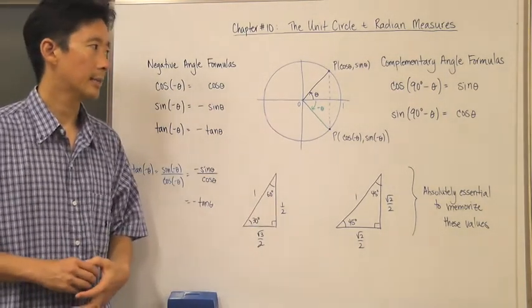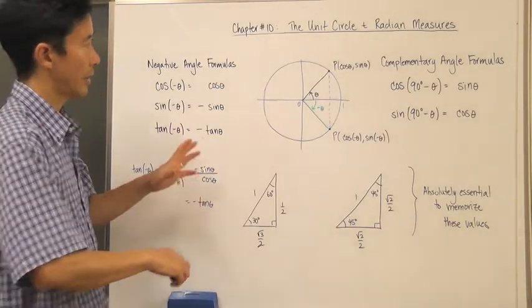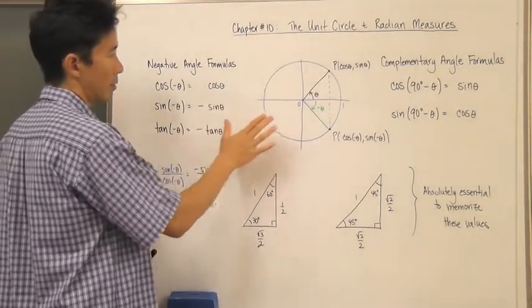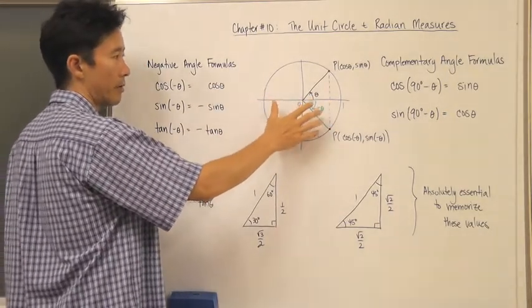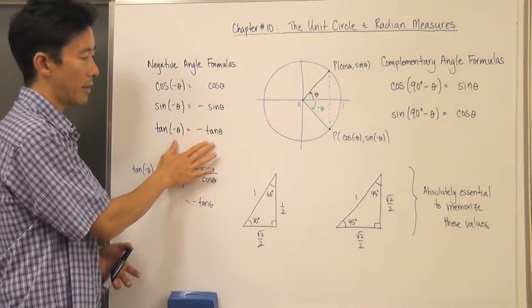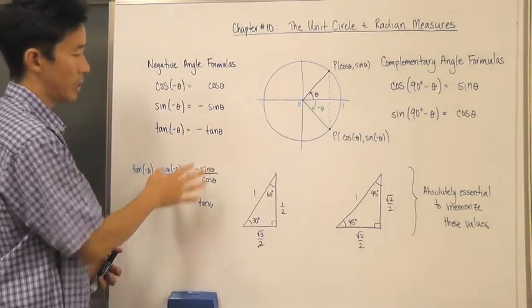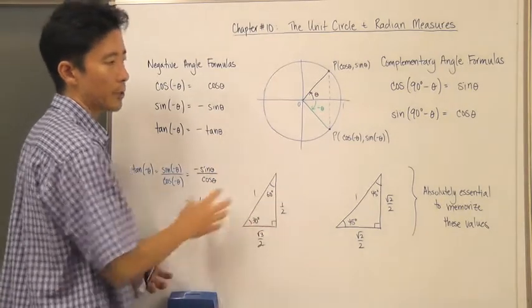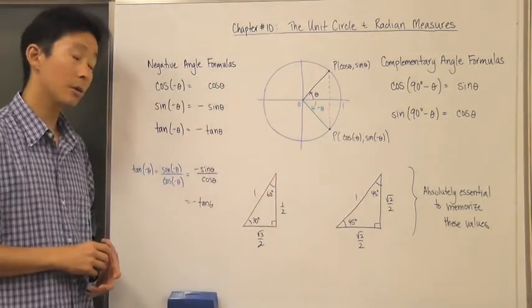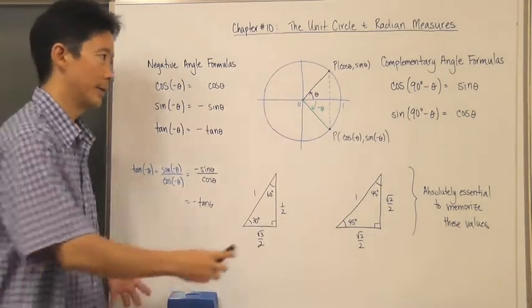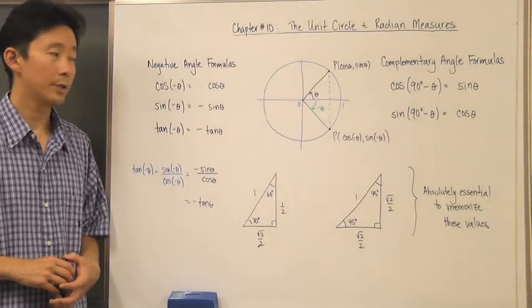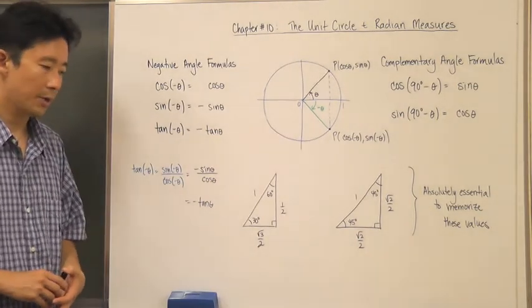To summarize: we started with the negative angle formulas and the complementary angle formulas, looked at how to compare a trig value of a negative angle versus a positive angle, and used that to derive the negative angle formula for tangent. We also looked at the two essential right triangles to memorize, and showed how the complementary angle formulas work for any angle. We'll look at some questions and do some problems in class.